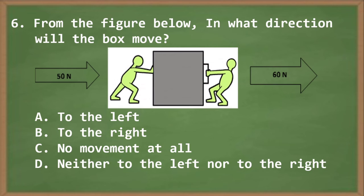Number six: From the figure below, in what direction will the box move? A, To the left. B, To the right. C, No movement at all. D, Neither to the left nor to the right.